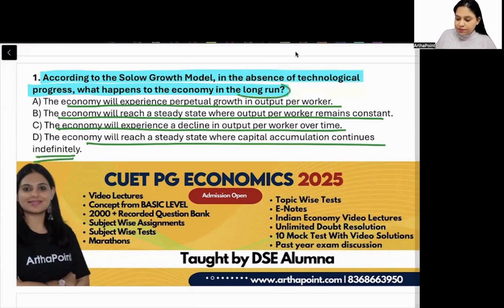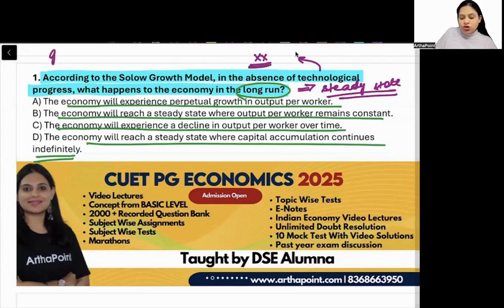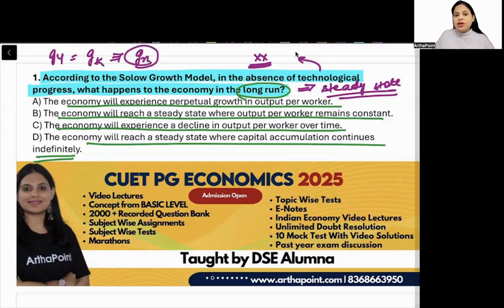Let's talk about the long run. In the long run, the economy is at a steady state. When the economy is at steady state and no technological growth is happening, then the growth rate of output and growth rate of capital are both at the rate of growth of labor. This is the growth rate of output or capital.